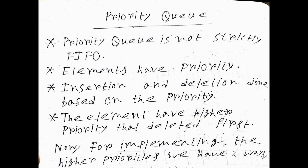As the name says, priority queue has a relation with priority. We know what the queue data structure is — it maintains FIFO, first in first out. But a priority queue does not strictly maintain the FIFO property.